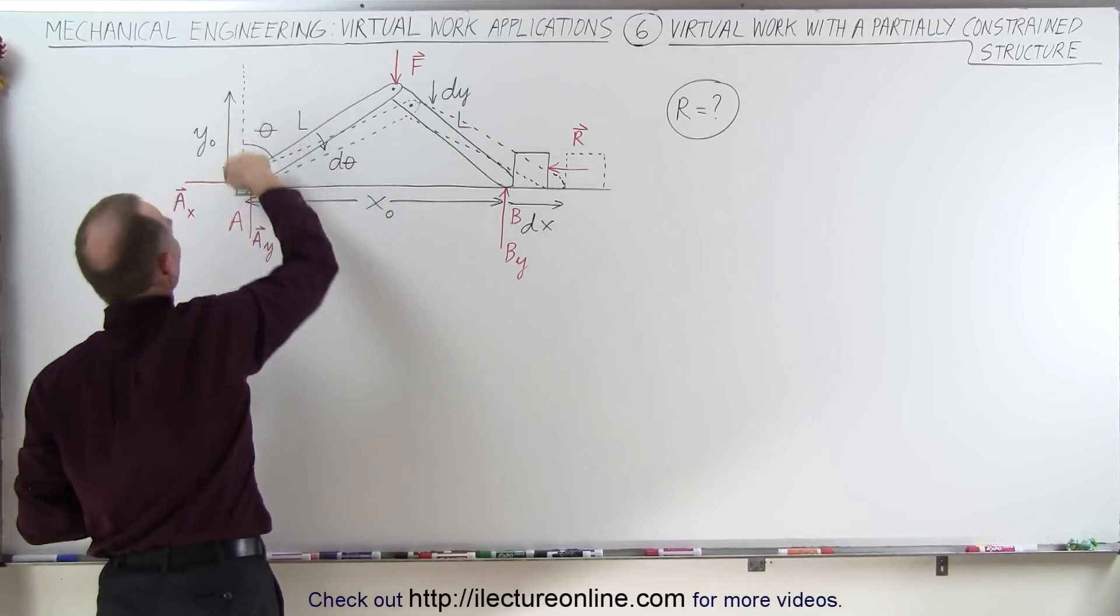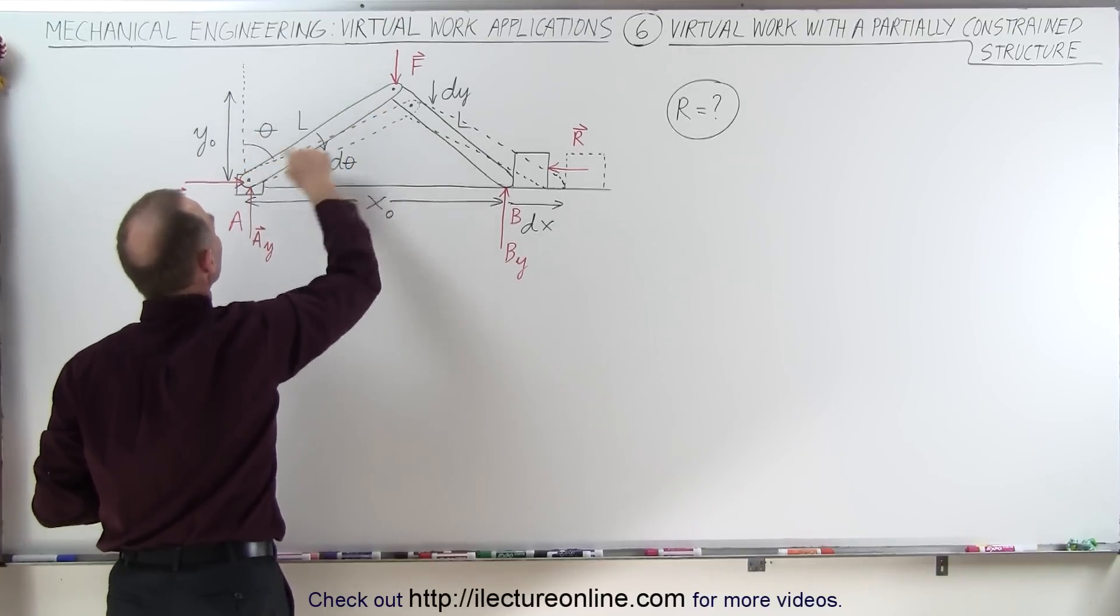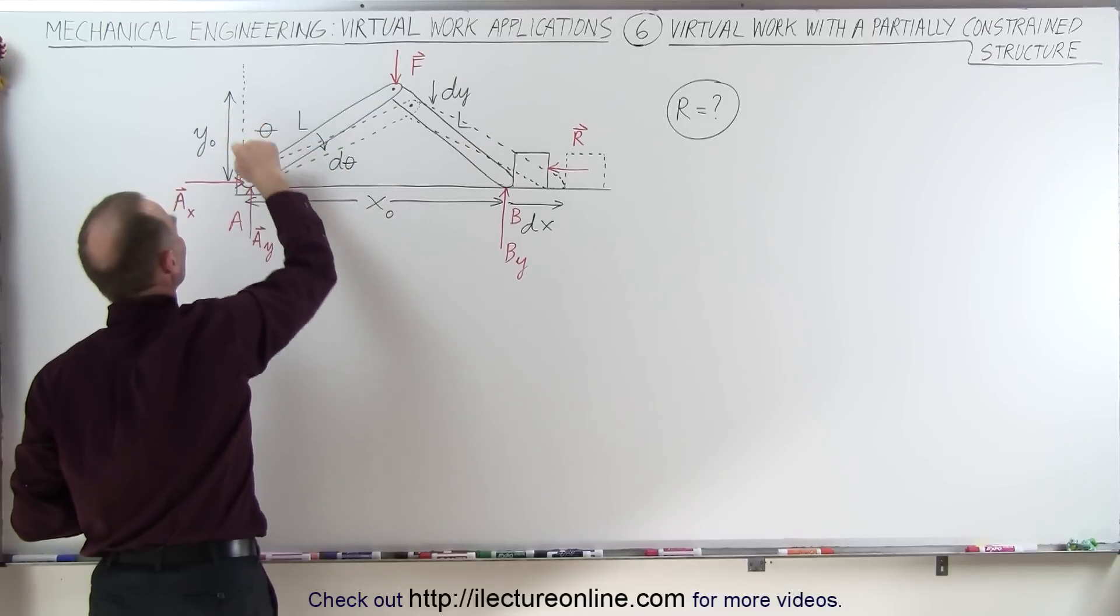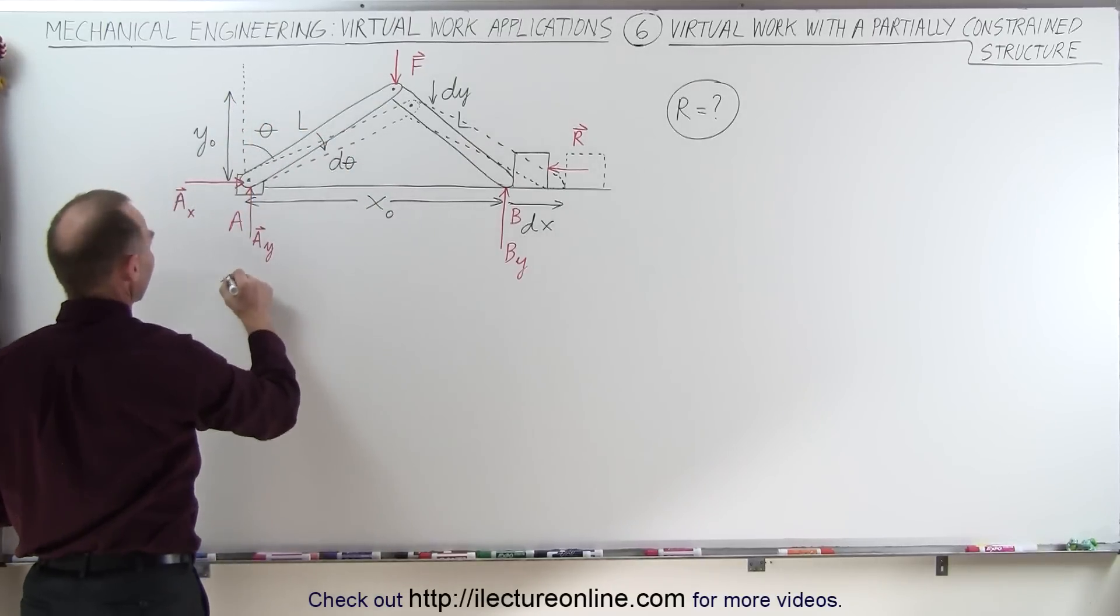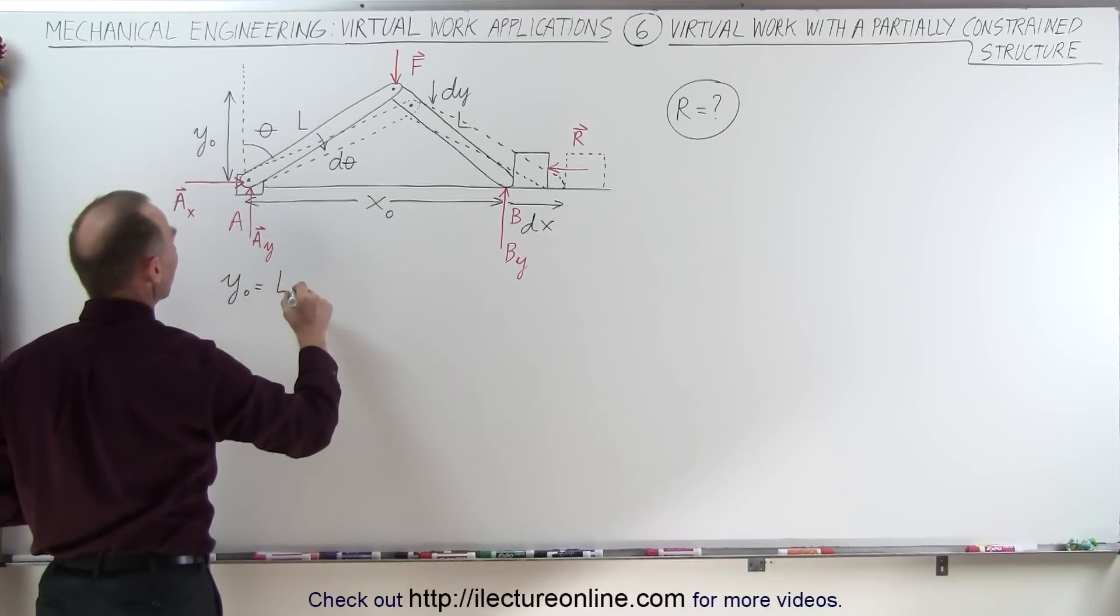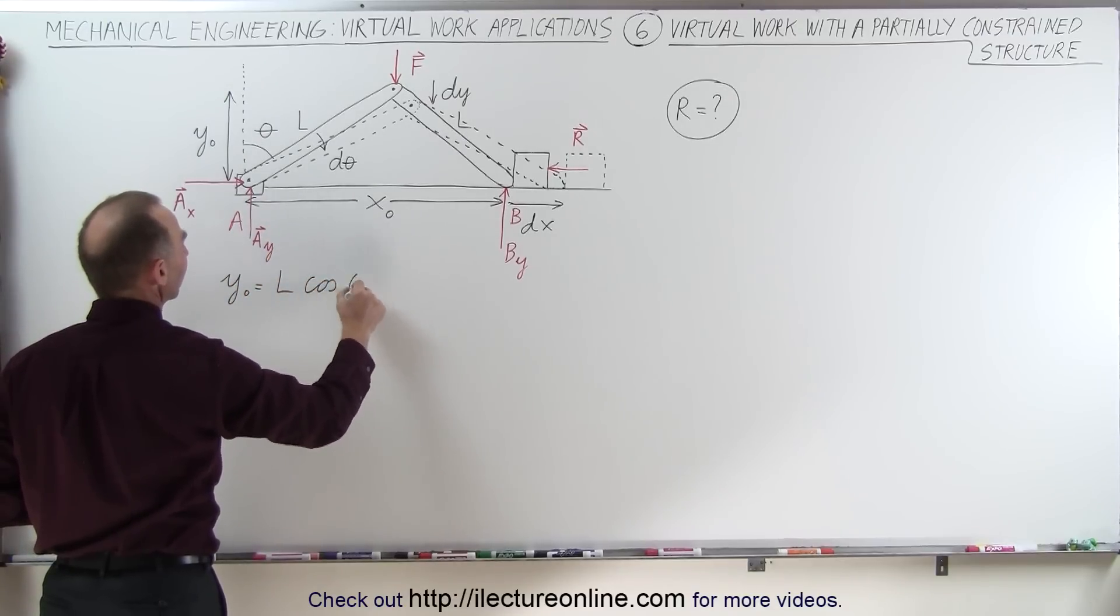we can say that Y here is equal to the length of this member times the cosine of this angle because it's adjacent to the angle. So we can define Y sub 0 as being equal to the length of the member times the cosine of the angle theta.